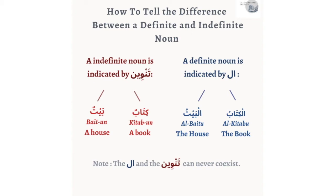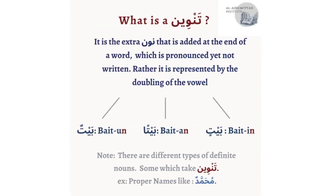What exactly is tanwin? It is the extra noon that is added at the end of the word, which is pronounced yet not written. For example, baytun — there is a noon there, but it's not written. Rather, it is represented by the doubling of the vowel: the doubling of the dhamma, the doubling of the fatha, and the doubling of the kasrah.